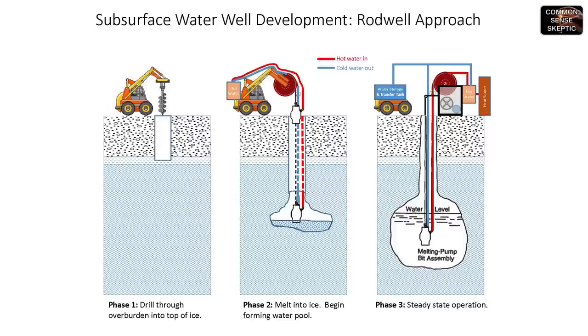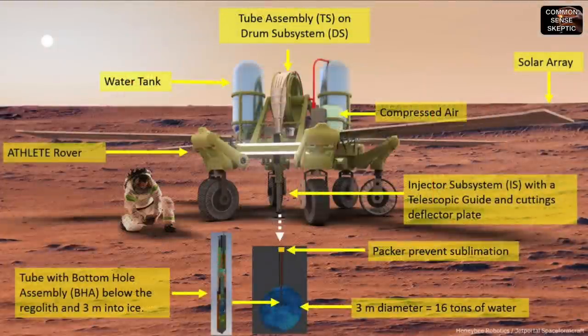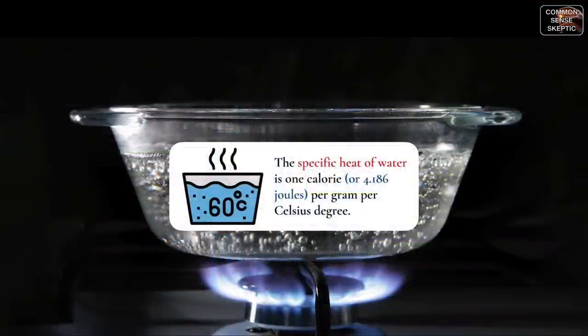To use something like a Rodwell system: this sends hot water down one pipe into a pocket of ice, melts the Martian ice around it, and pumps back cooler liquid water. This requires a drilling rig, a pump assembly that works under Martian gravity and atmospheric pressure, and a heating source for the water — all of which will have to run on electricity.